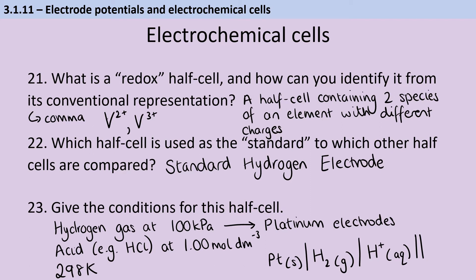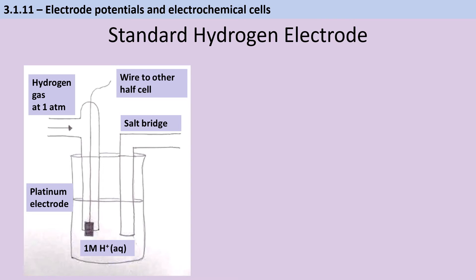So your conventional representation is going to look something like this. We've got our platinum electrode, and then the vertical bar, the hydrogen gas, and then the vertical bar, and then the hydrogen from the acid. And we don't include spectator ions, we don't need to put the chloride ions in there, and then the double vertical bar for the salt bridge. So it's going to look something like this. I didn't ask you to draw it, but that's what you're aiming for anyway.